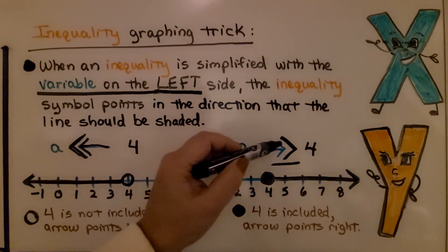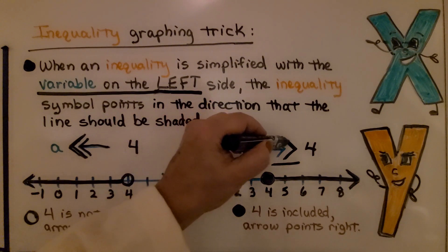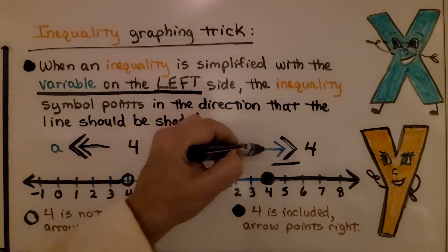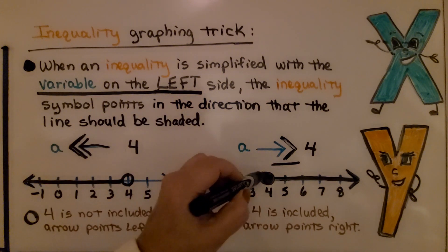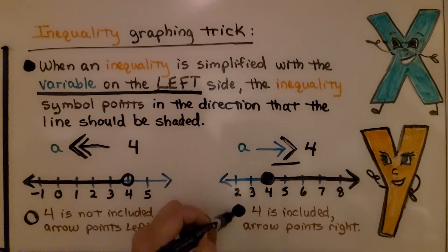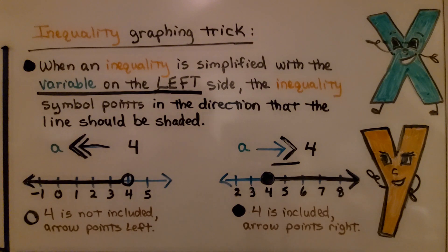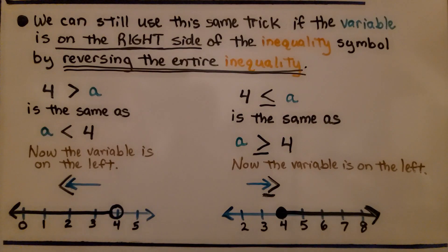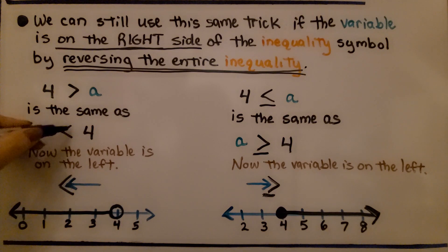If we have A is greater than or equal to 4, the inequality symbol looks like an arrow pointing to the right. Because it has 'or equal to,' we use the shaded-in circle since 4 is included, and the arrow points to the right. That's a pretty cool trick, but remember it only works if the variable is simplified and on the left side — then the symbol tells you which way the arrowhead is pointing.